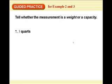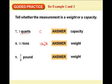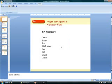Tell whether the measurement is weight or capacity. Quart is capacity. That's how much something can hold. Ton is weight. Weighs a ton. Pound is weight. And, wow. That can't be it. Oh, we have some more. Let's go back. I guess it's just going to be right here.